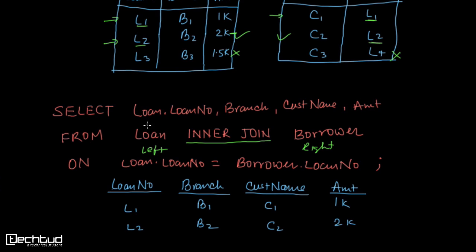If we don't specify the attributes to be listed, if we just write FROM Loan INNER JOIN Borrower ON this condition, then we will have an output with attributes from both tables in order. Loan number will be repeated in that case. I would request you to perform these queries on a terminal